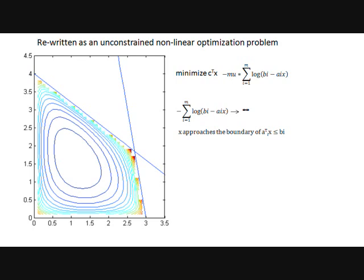The result is that as x approaches one of the boundaries of our feasible region, the barrier function approaches infinity. Since we are minimizing the objective function, the barrier function keeps us from going outside of our feasible region.